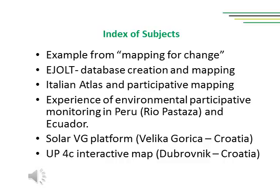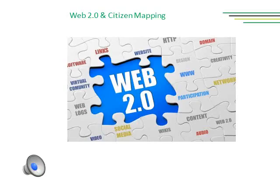We will introduce some examples of participatory use of GIS. Over the last 20 years, in both developing and developed countries, we saw an increase of participatory mapping initiatives. A lot of citizens, thanks to the new technologies of Web 2.0, can now contribute in web-based social networking sites. The Web 2.0 gave a boost to the growth and prosperity of collective endeavours in site-related activities among citizens.